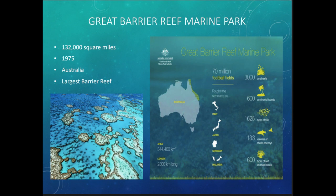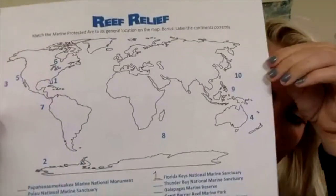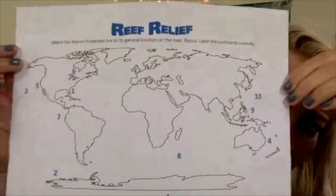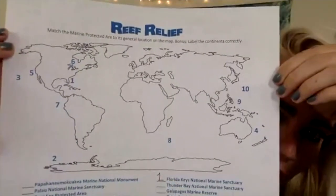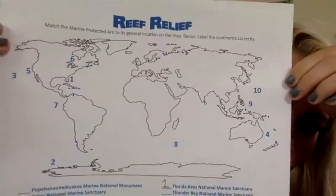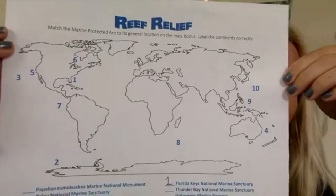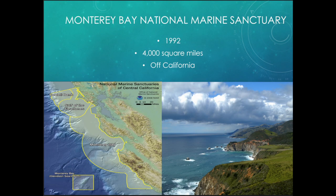There are a lot of marine areas in the world — I just chose 10 here. The final one is the Monterey Bay National Marine Sanctuary. Monterey Bay is in California. The Monterey Bay National Marine Sanctuary was created in 1992 and is 4,000 square miles.